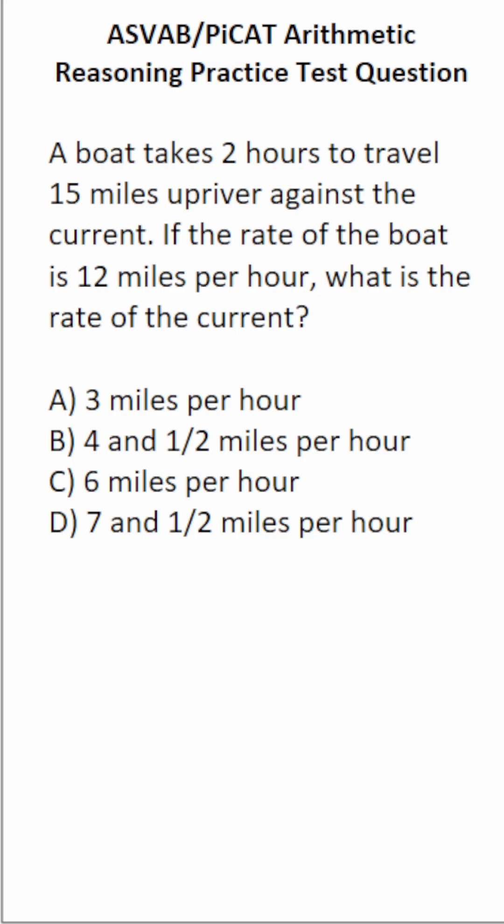You may have recognized that we have all the elements of the distance formula. That is distance equals rate times time. We have a time of two hours, a distance of 15 miles, and a rate of 12 miles per hour. That said, we have to make a modification to this formula to include this other variable called current, which I'm going to call C.